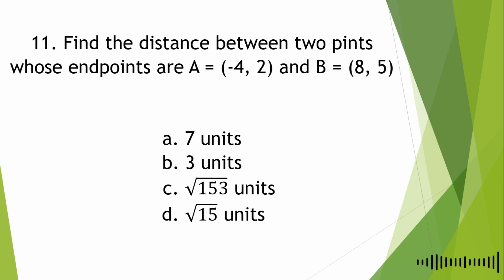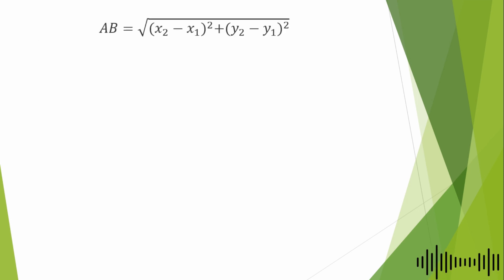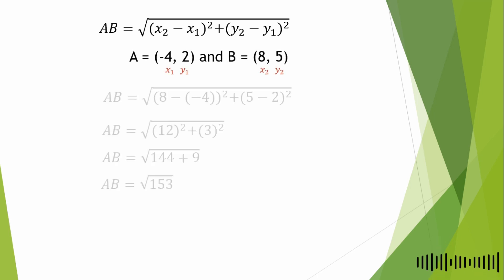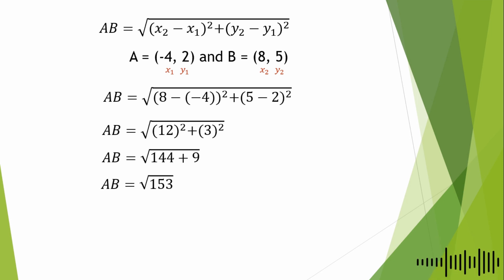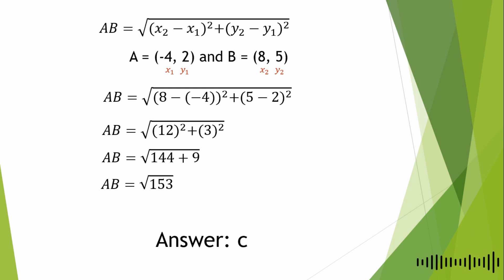For the 11th question: find the distance between two points whose endpoints are A(−4, 2) and B(8, 5). A. 7 units, B. 3 units, C. √153 units, D. √15 units. Using the distance formula: AB = √[(x₂ − x₁)² + (y₂ − y₁)²]. Substituting: AB = √[(8 − (−4))² + (5 − 2)²] = √[12² + 3²] = √[144 + 9] = √153. Since 153 is not a perfect square, the answer is letter C.